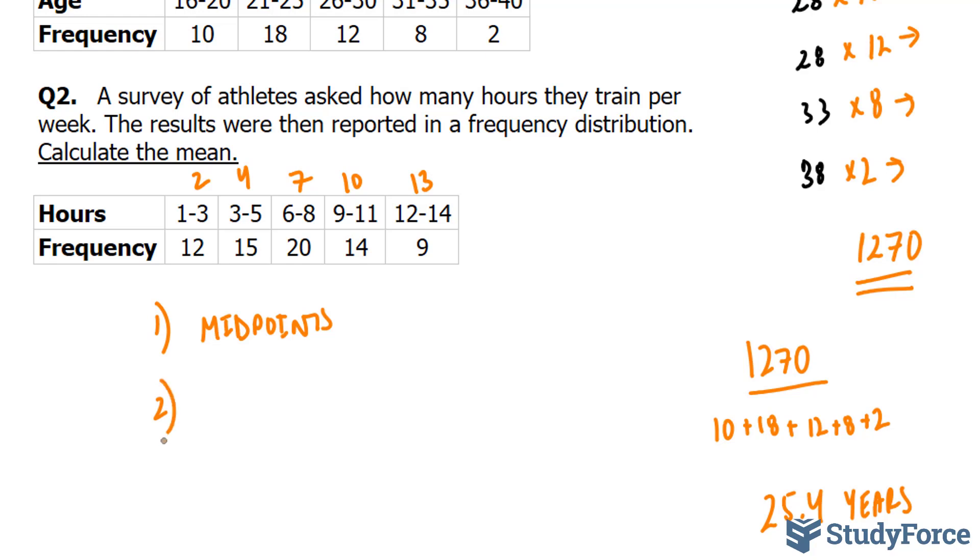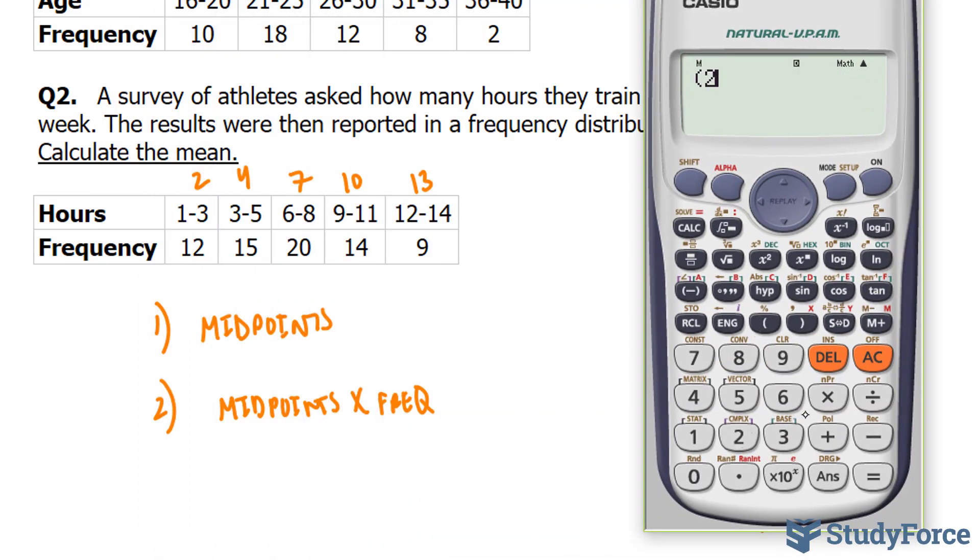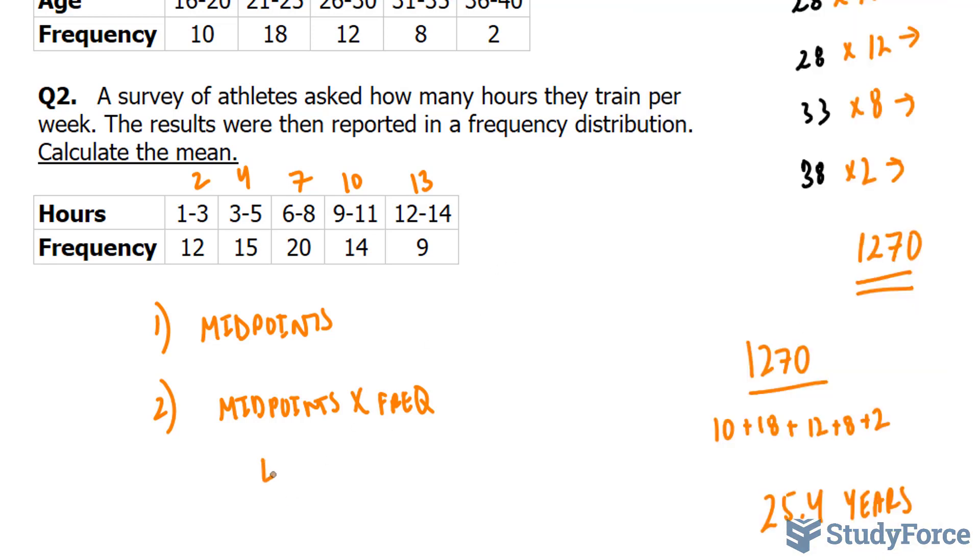Number 2 is we take these midpoints and we multiply it to the frequency. So midpoints times the frequency. We sum that up. So let's go ahead and do that. 2 times 12 plus 4 times 15 plus 7 times 20 plus 10 times 14 plus 13 times 9. And this gives us 481.